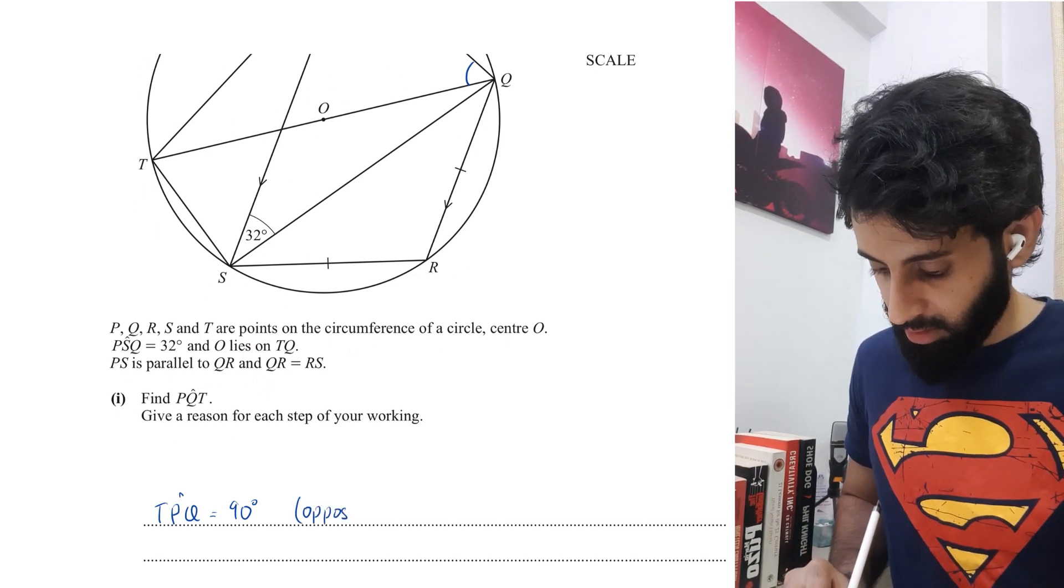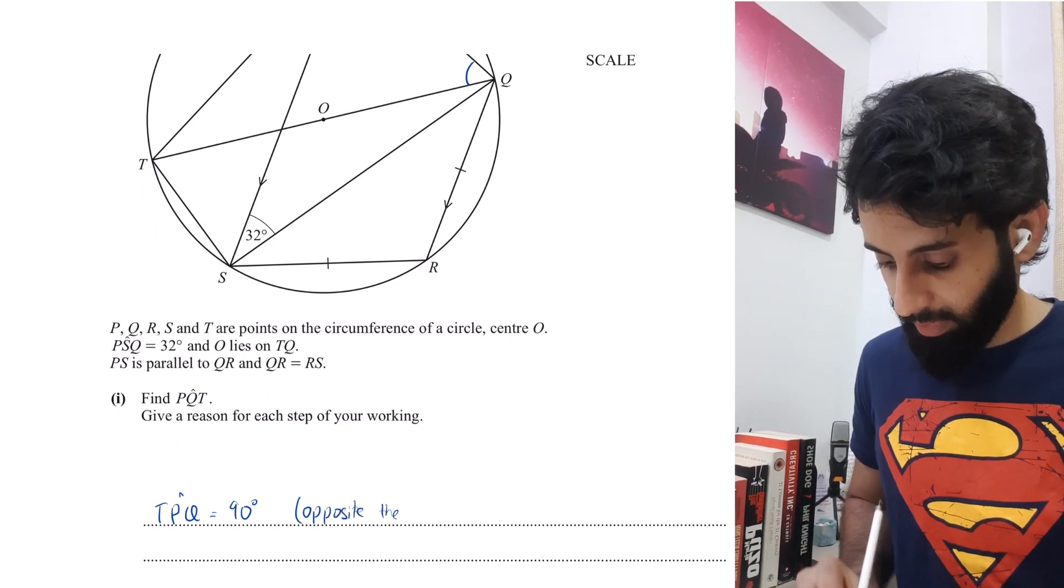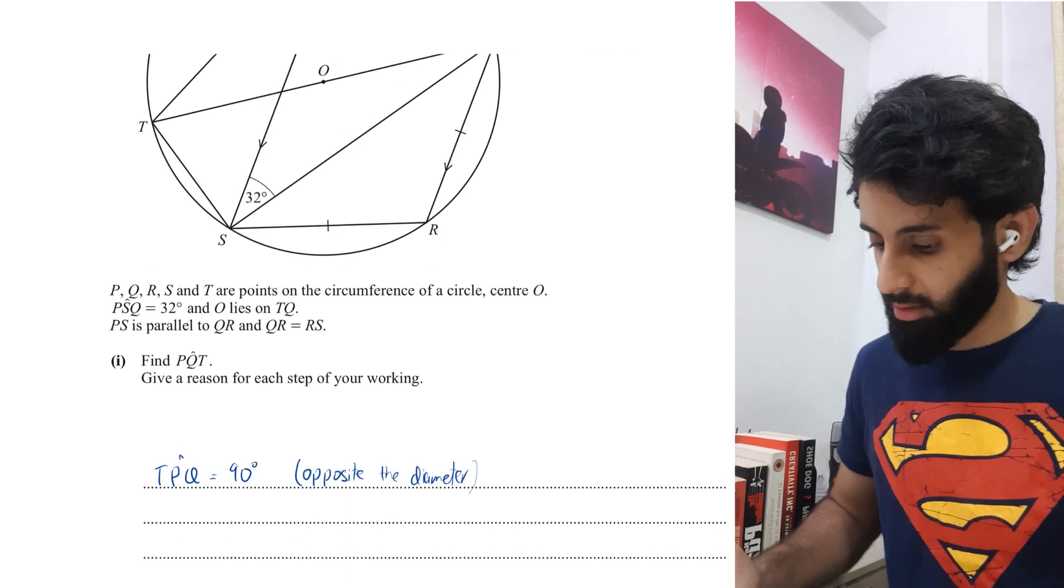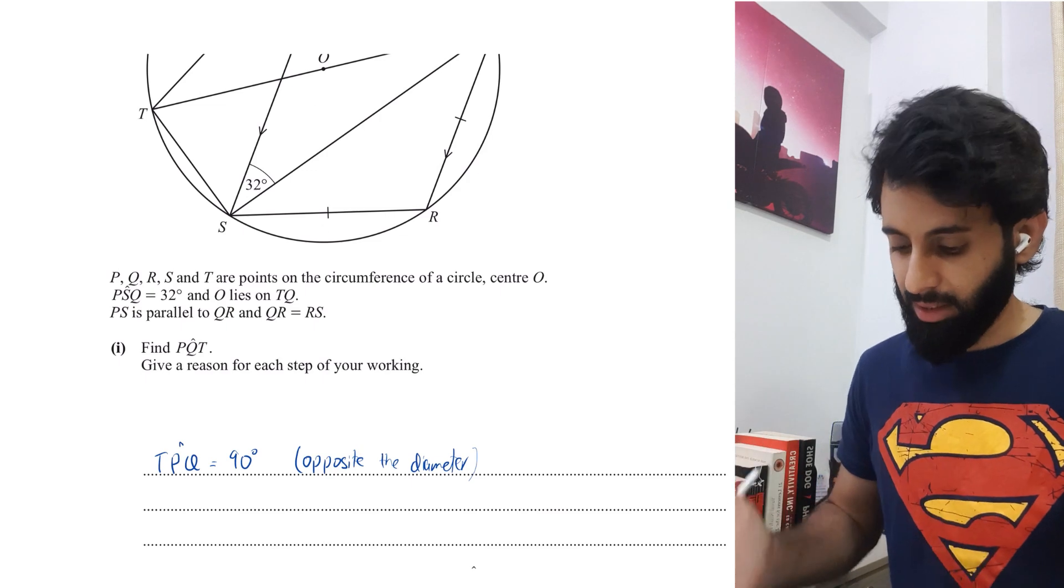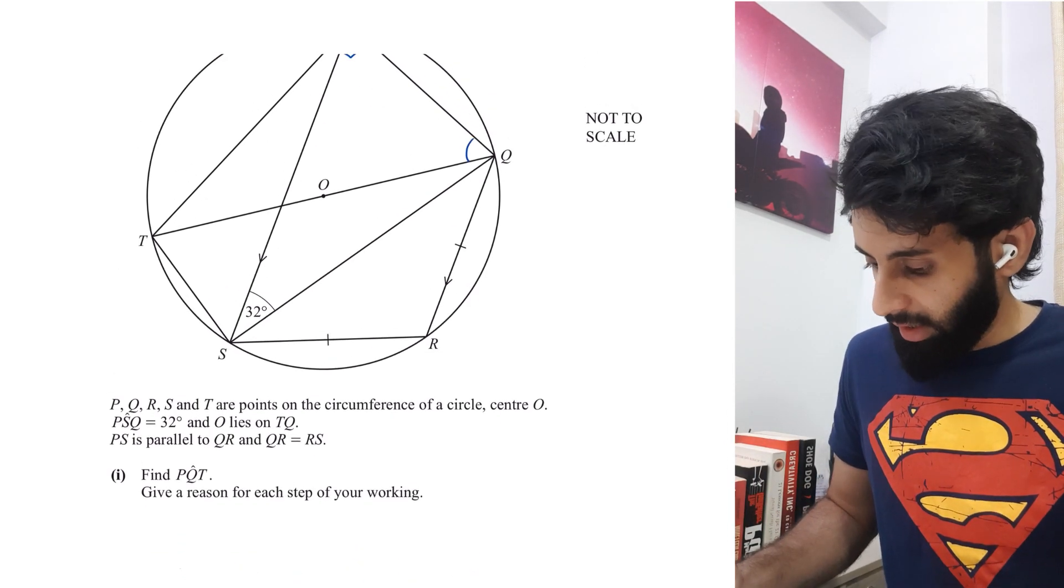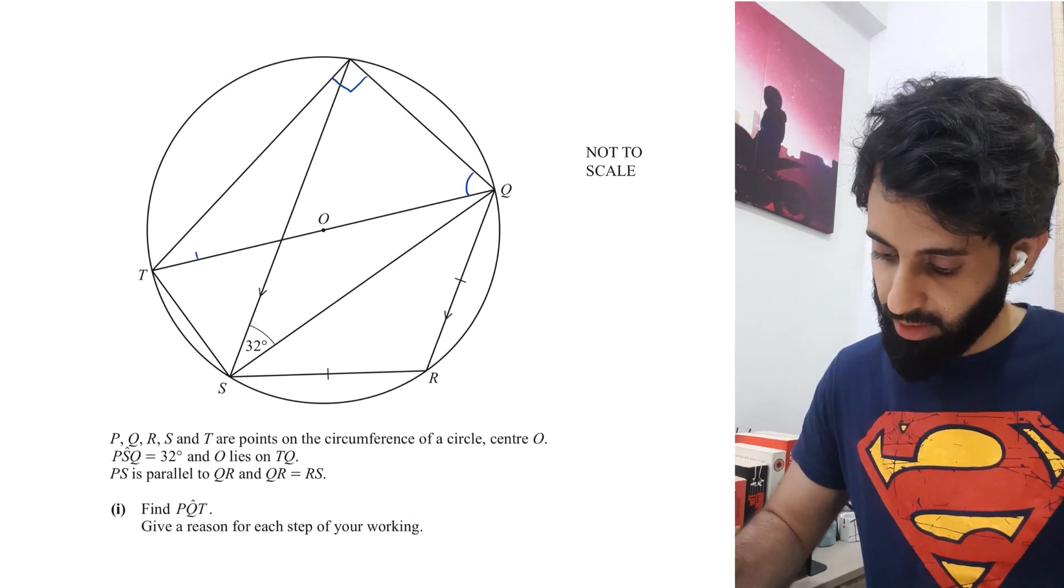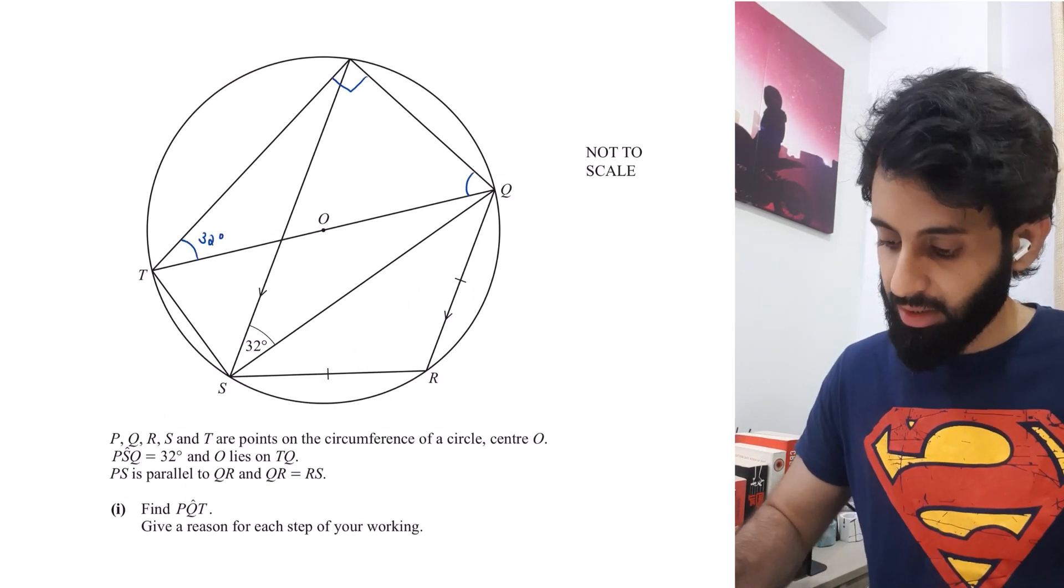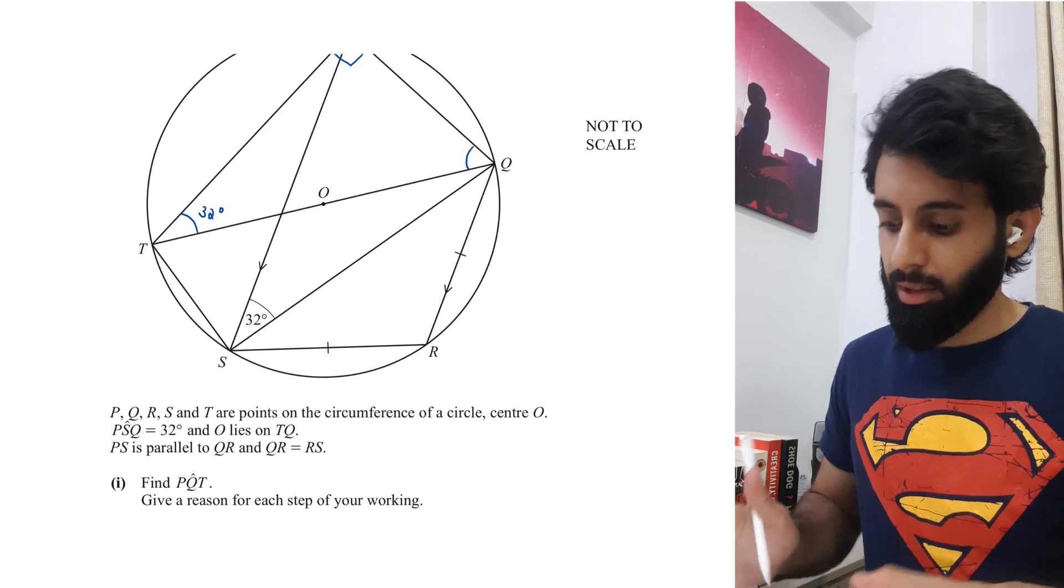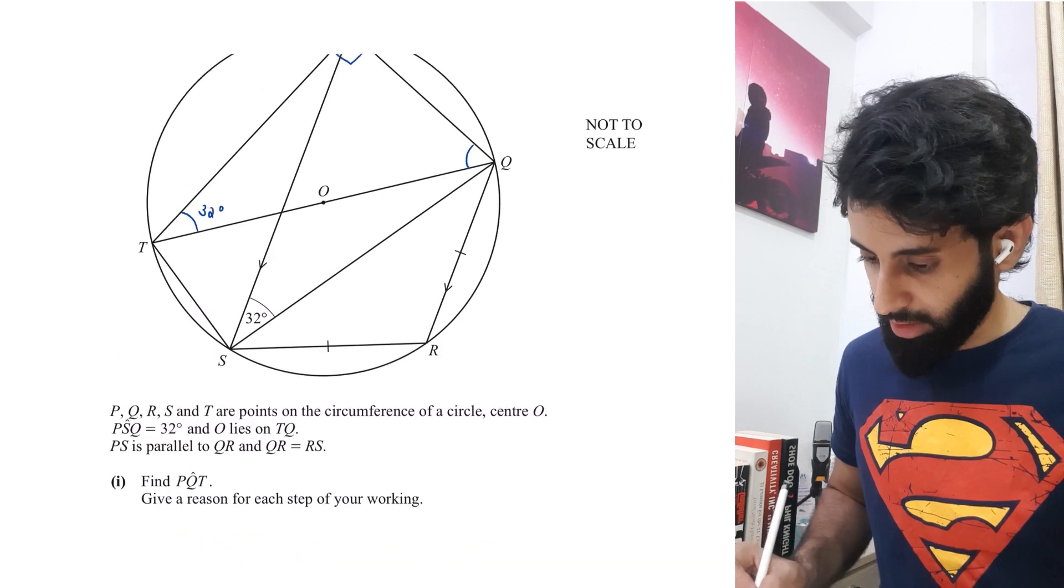Next, something tells me this angle will also be 32 degrees. What's the property? The property is same segment. Again, I have detailed videos on angle properties of circles - make sure to check it out.